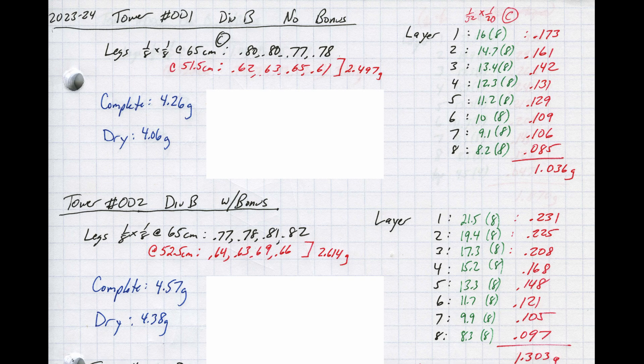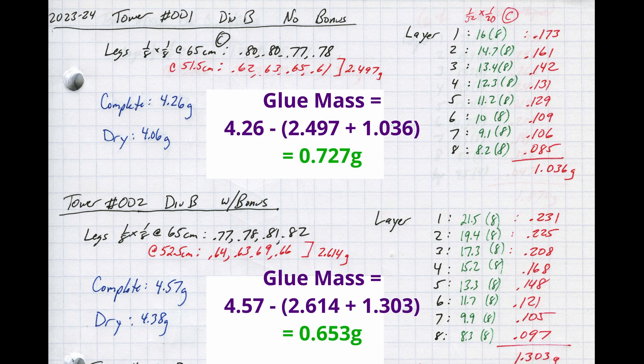Another very important thing to keep track of is the mass of each layer of the tower. You will see that this will become even more important in future builds. If you do the math, you can compute the glue usage for these two towers. It's a simple matter of subtracting the total mass of the legs and cross members from the as-built mass.